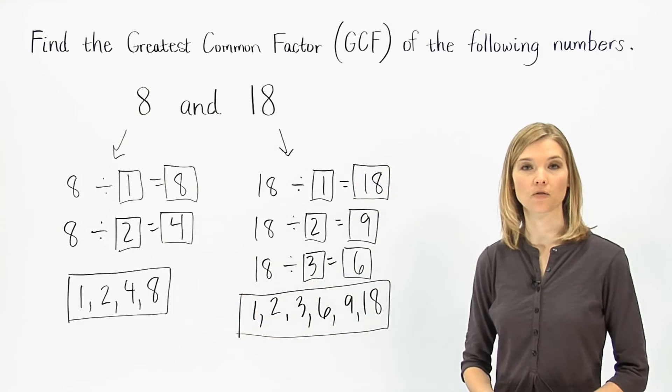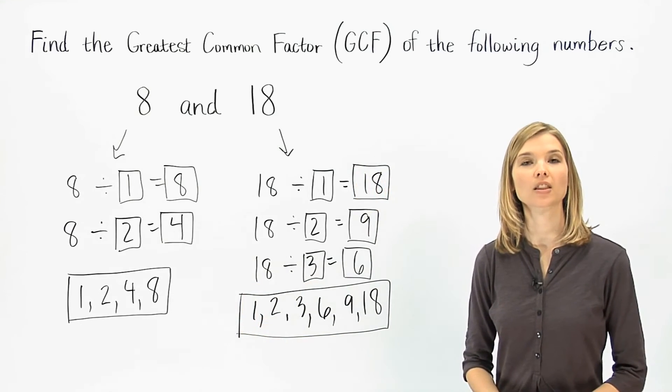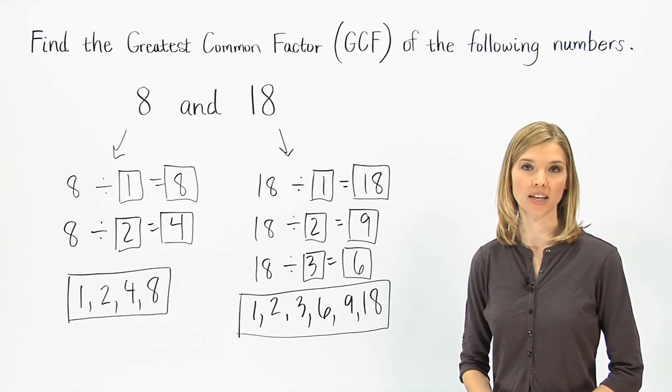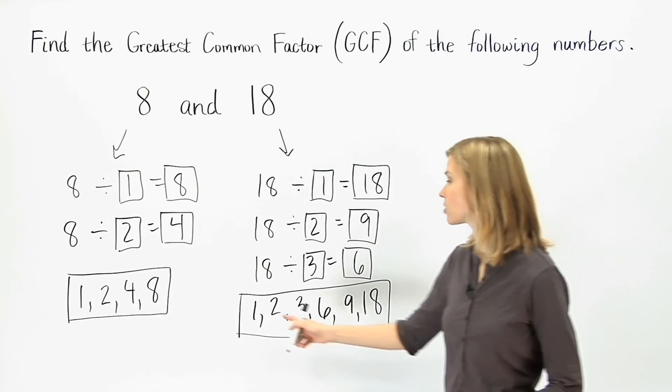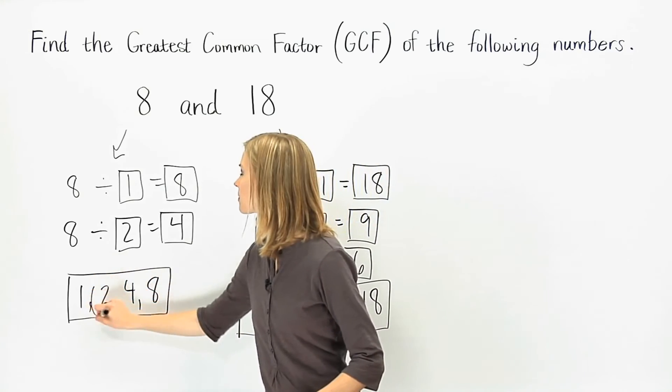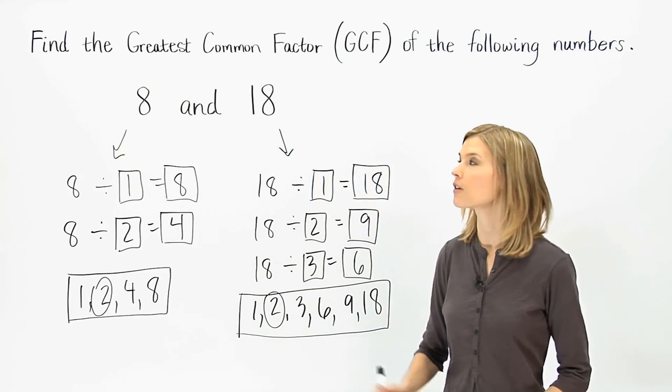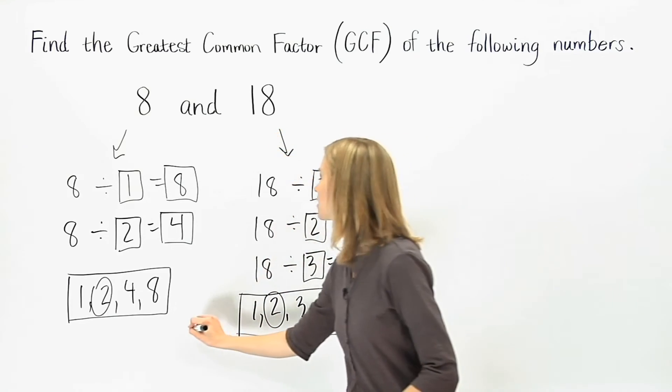Now that we have our lists of factors, to find the greatest common factor, or GCF, we simply find the largest number that is shared by the two lists. Notice that our lists share a 1, but the largest number they share is a 2. So the greatest common factor, or GCF, of 8 and 18 is 2.